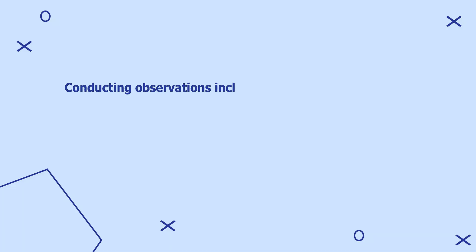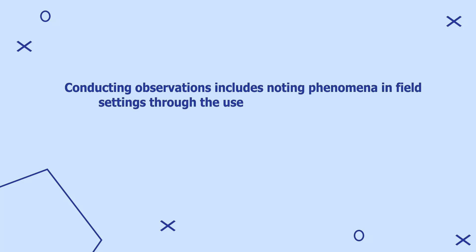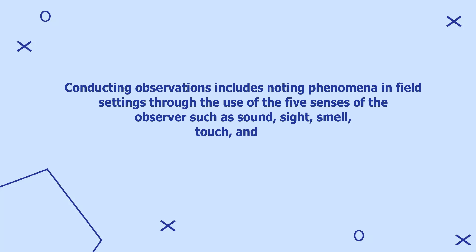Let's look at some tips to conduct participant observations in qualitative research. Conducting field observations is one of the most effective ways of collecting data in qualitative research. Conducting observations includes noting phenomena in the field setting using the five senses of the observer: sound, sight, smell, touch, and taste. The researcher also uses a note-taking instrument to record observations. The purpose of research and research questions will be the main determinants of the observations made by a researcher.